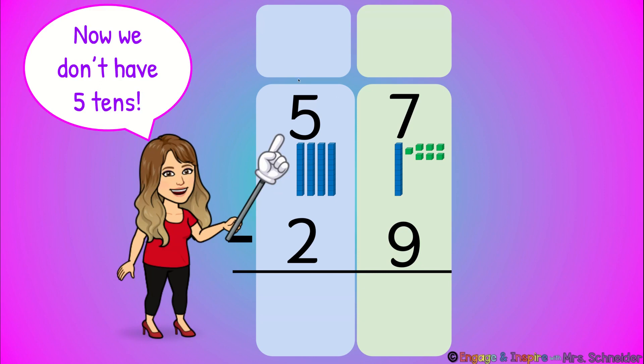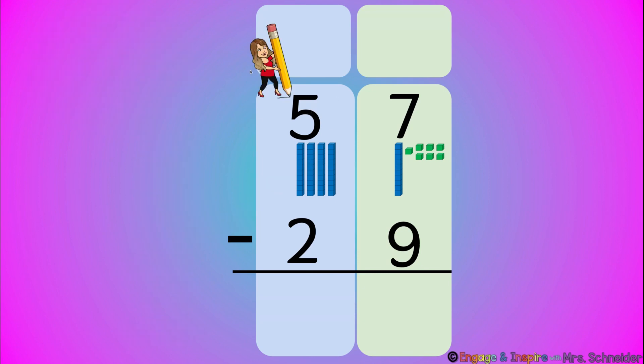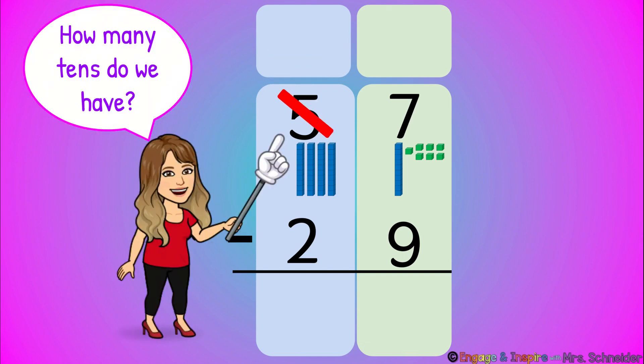Now we don't have five tens anymore. How many tens do we have? We have one, two, three, four, right? Five tens minus the one ten that we put over in the ones place equals four tens.